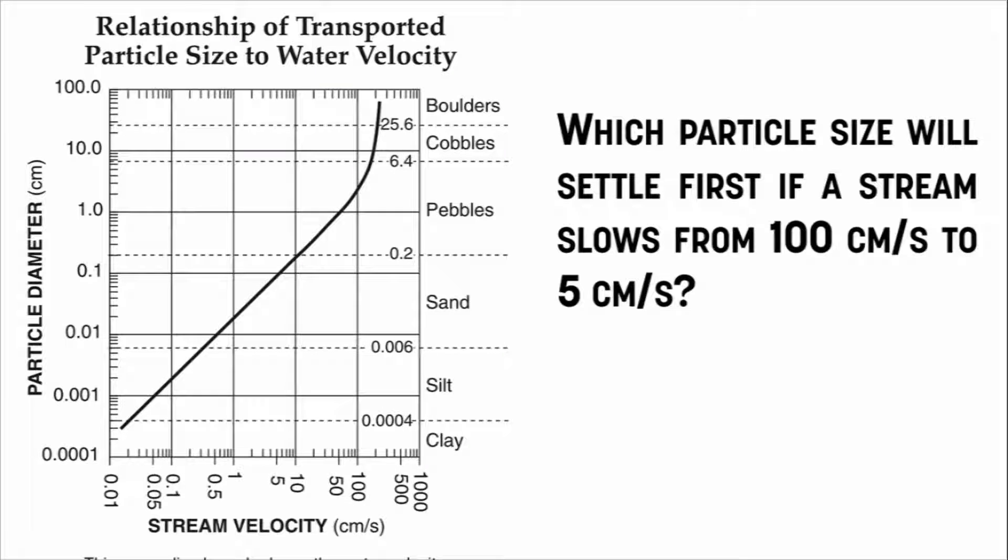All right, our last example. We have a stream that's flowing at 100 centimeters per second, and it slows down to 5 centimeters per second. Which particle will settle first? So a very real situation, a stream slows down, what's getting dropped off first? So it's already traveling at 100 centimeters per second. If it gets down to 5 centimeters per second, what's a particle that can't be carried at 5 centimeters per second anymore?